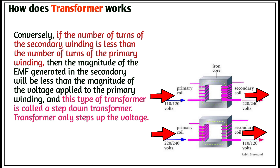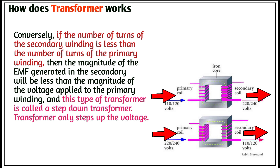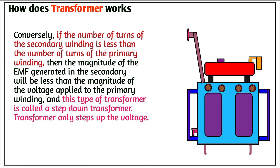In contrast, if the number of turns of the secondary winding is less than the number of turns of the primary winding, then the magnitude of EMF generated in the secondary winding will be less than the magnitude of voltage applied to the primary winding, and this type of transformer is called a step-down transformer. Electrical transformers only step up or step down the voltage.